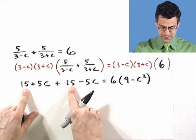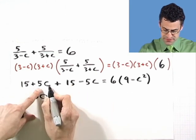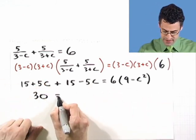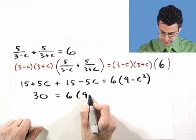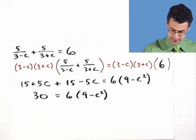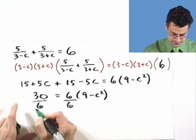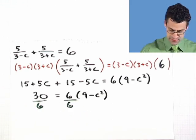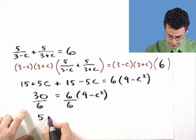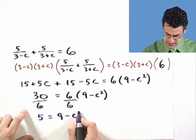So, where are we? I see fifteen plus fifteen, that is thirty. Five C minus five C actually equals zero, so they actually go away. And I just am left with this. I can divide both sides by six, just to simplify this a little bit. And I'm left with five equals nine minus C squared.